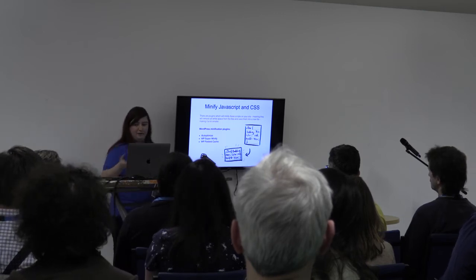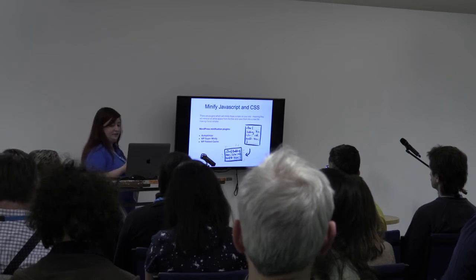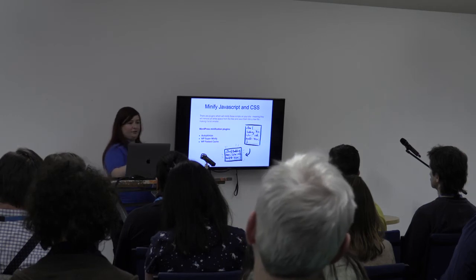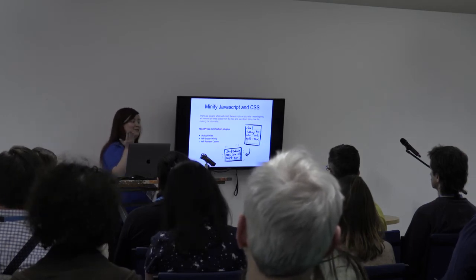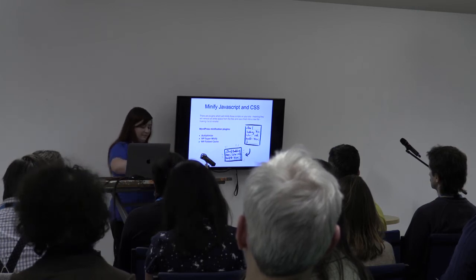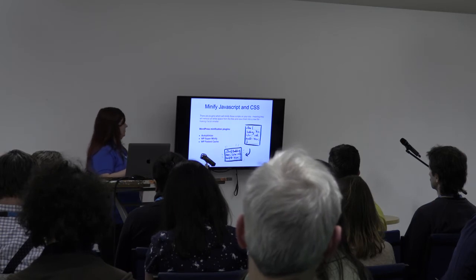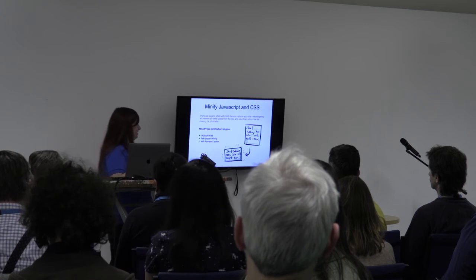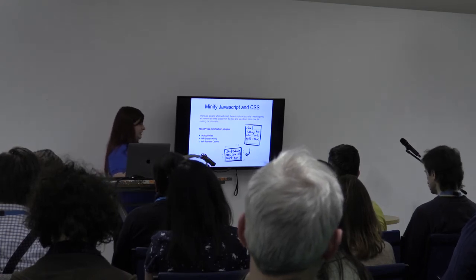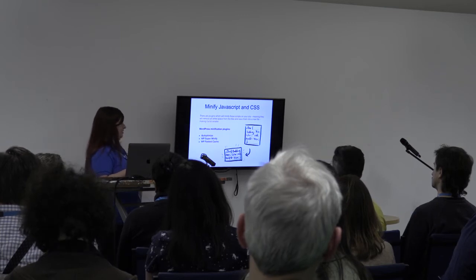The other big culprit on my website was the need to minify JavaScript and CSS. This is really easy to do with a plugin. What these do is take your CSS file — which looks really pretty with everything lined out — and shrink it all down into one line of code, removing all the white space, resulting in a smaller file. Plugins that can do this include Auto-Optimise, WP Super Minify, and WP Fastest Cache, and there are plenty of others. Some themes do this as well.